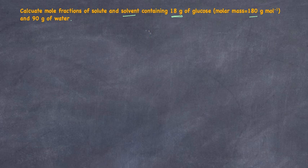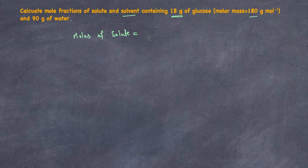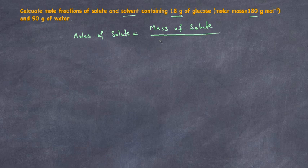The formula is: moles of a component — in our case the solute, which is glucose — equals the mass of the solute divided by the molar mass of the solute.